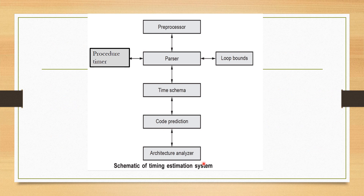This is the schematic of the timing estimation system. First, the preprocessor — that is our code — is given to the parser, where the code is analyzed. Then the procedure timer calculates the number of procedures and notes their time durations in a table. Then loop bounds calculates the number of loops and the number of iterations each carries. Then the time schema determines how much time is required for execution. Then there is the code prediction module and the architecture analyzer.